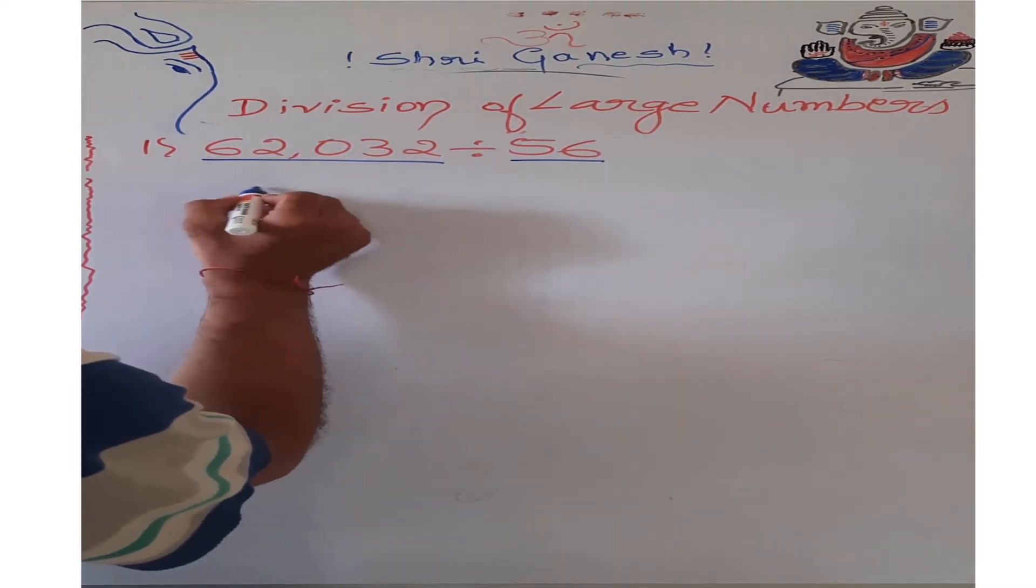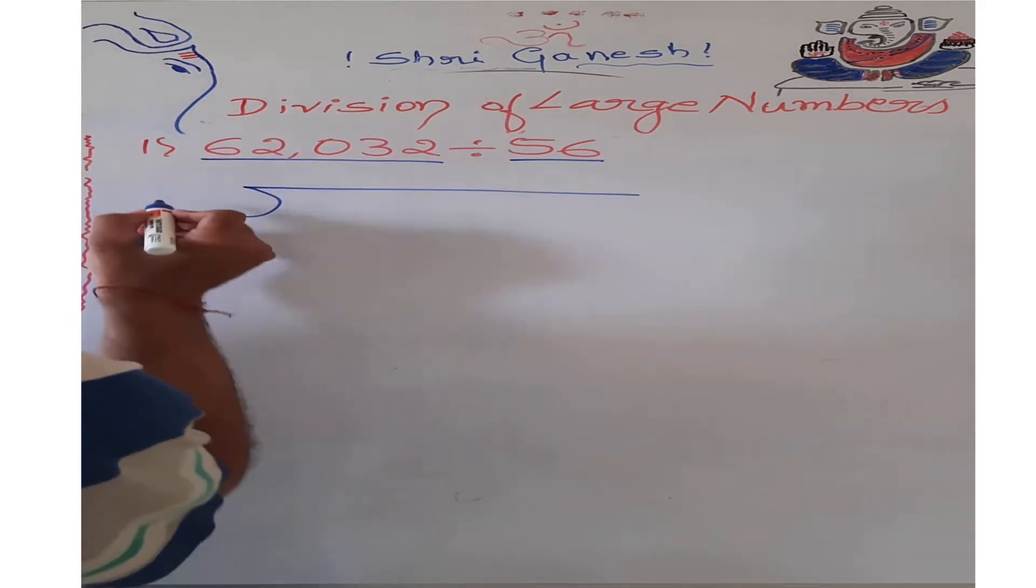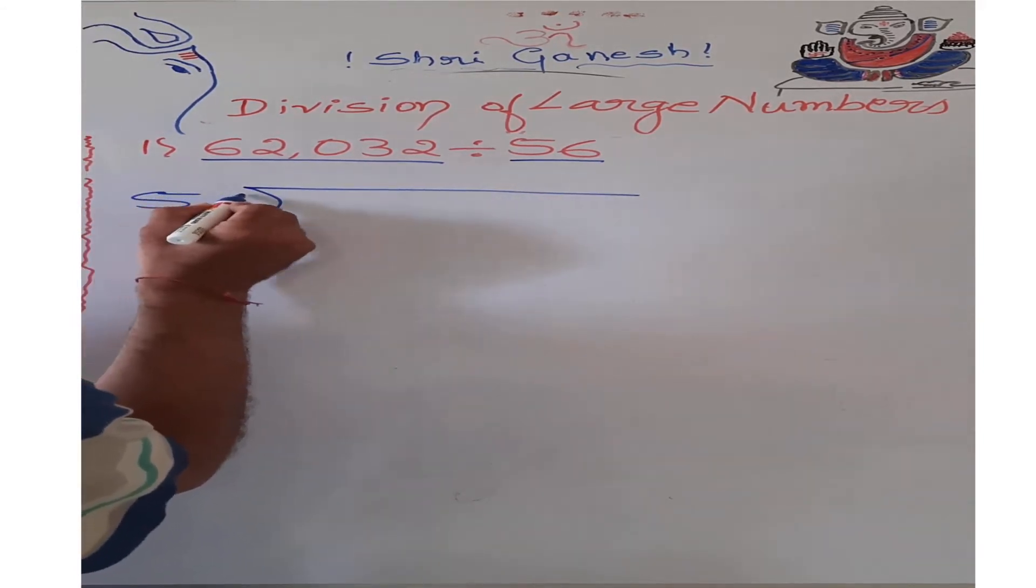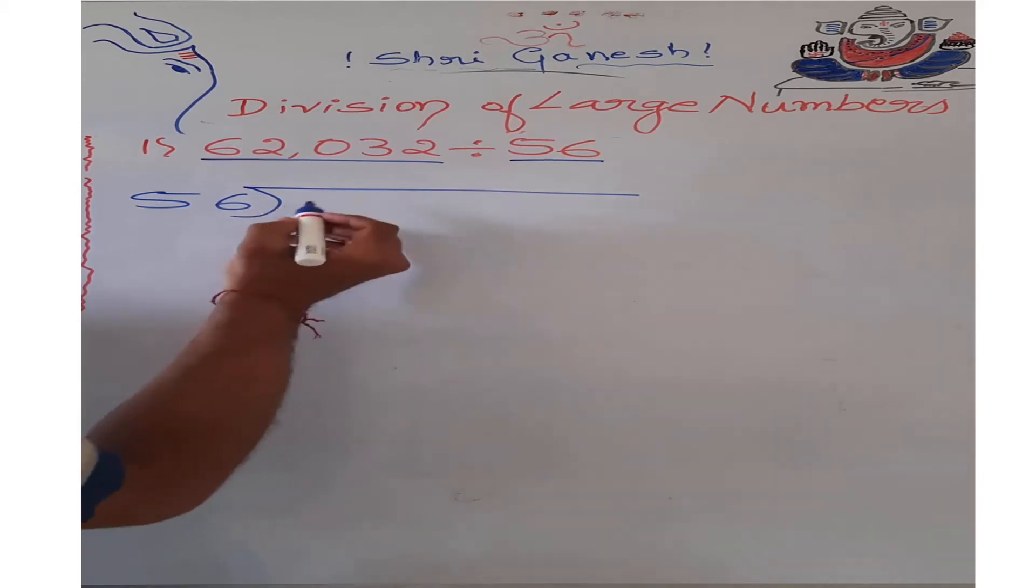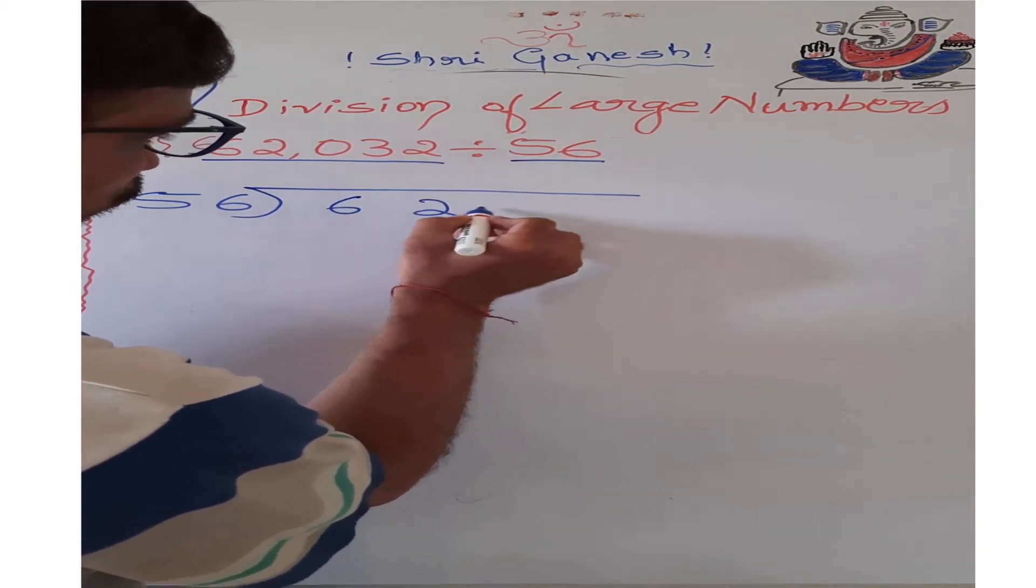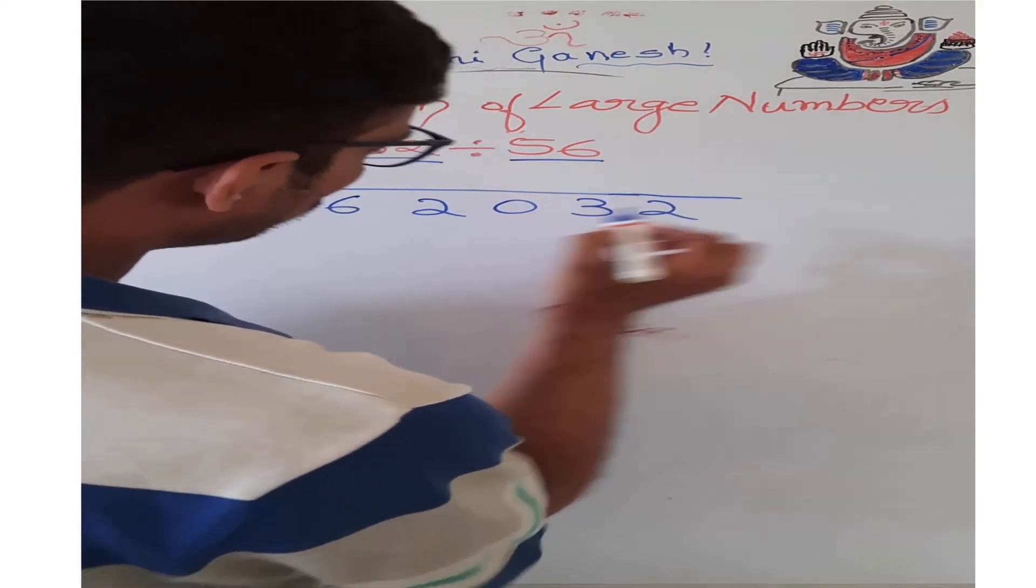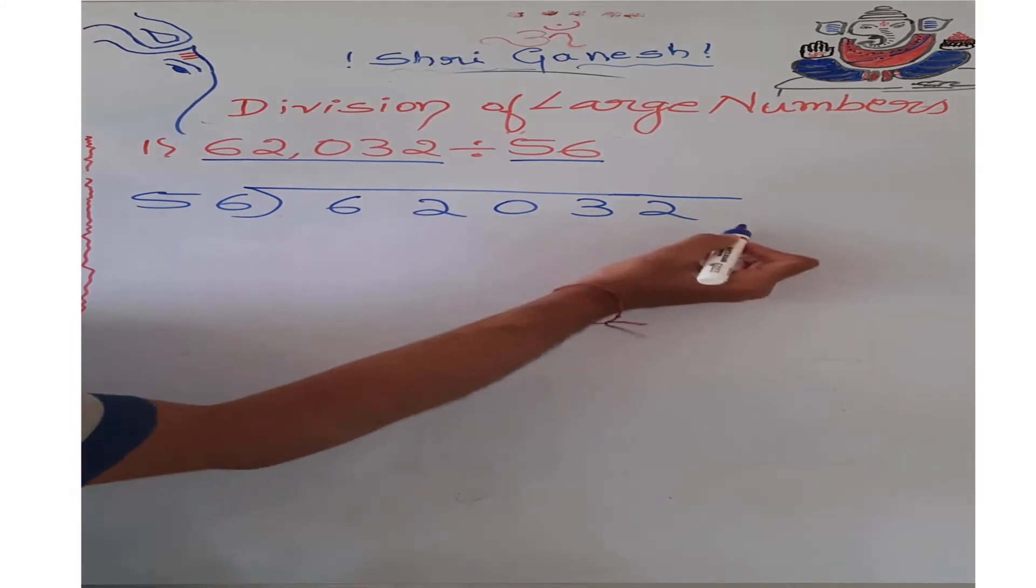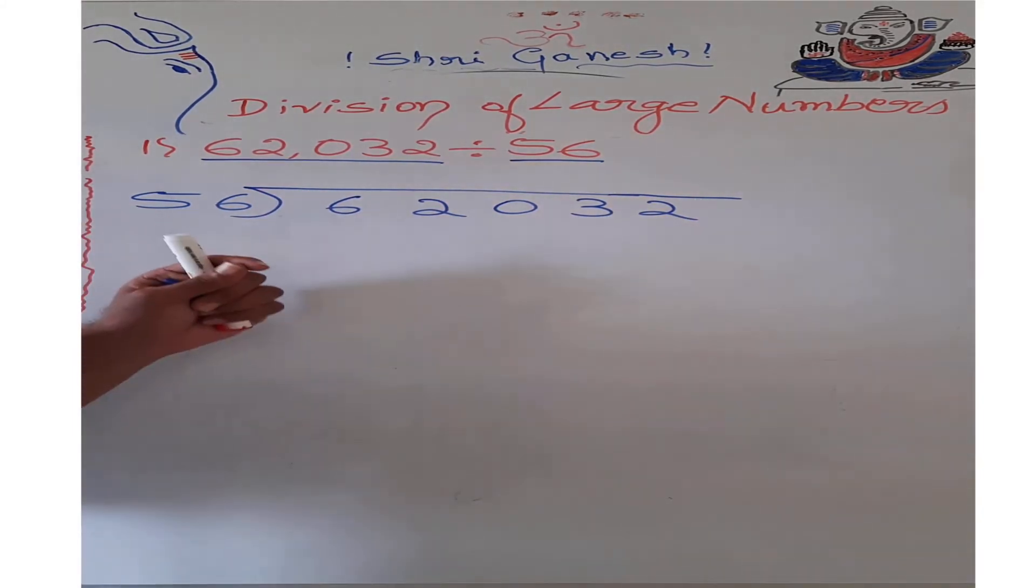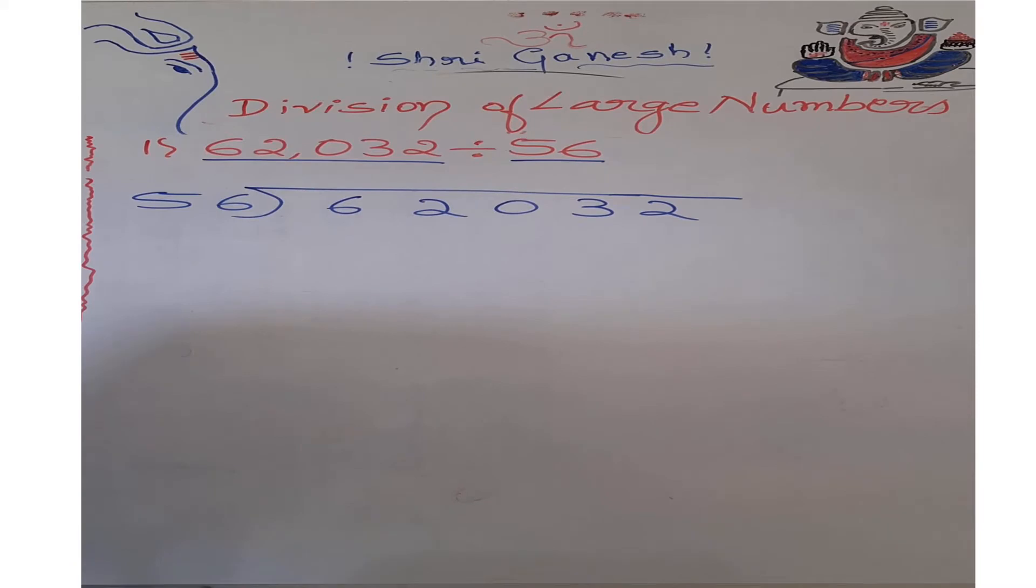So we will write this number in the division symbol first. Always we will write divisor here, dividend we need to write inside the symbol: 6, 2, 0, 3 and 2. Leave the space between each digit so that it is easy for us to divide each digit and to write the quotient with respect to that digit.